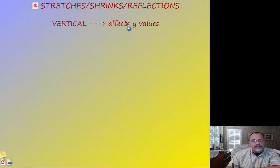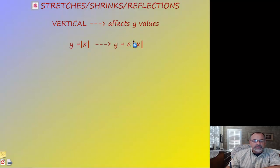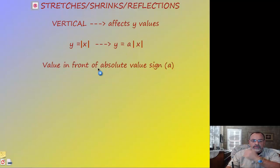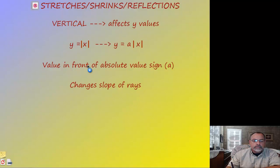A vertical stretch or shrink is going to affect the y-values. If we stretch the y-values, that's a vertical stretch, and it shows up as a number in front of the absolute value symbol. The number on the outside is a vertical stretch and it changes the slope of the rays — ninety percent of the time it appears in front of the absolute value.